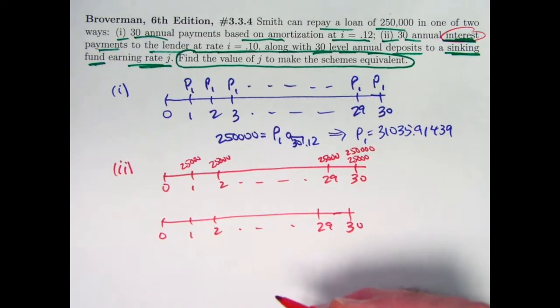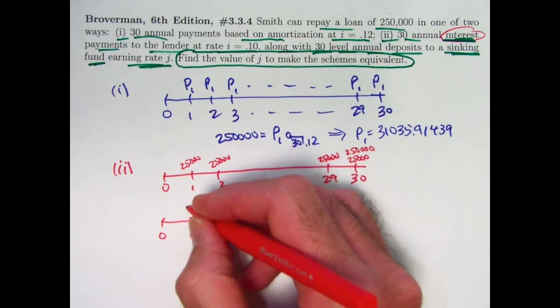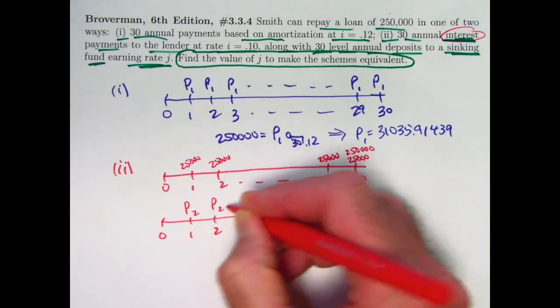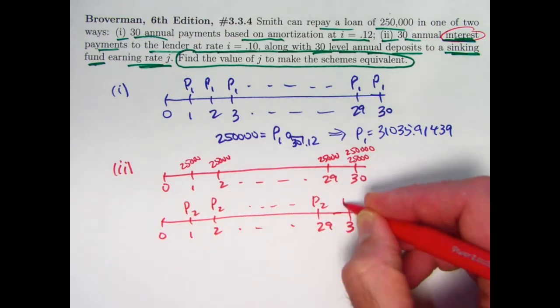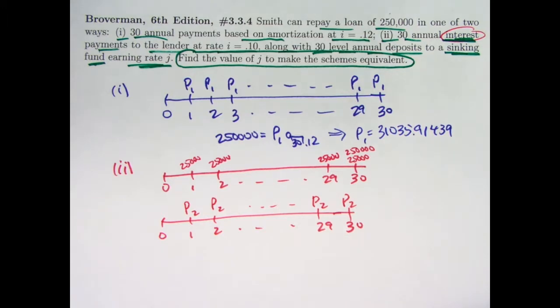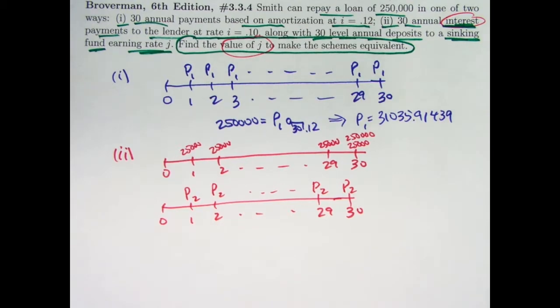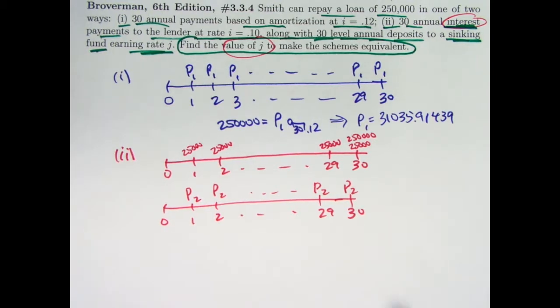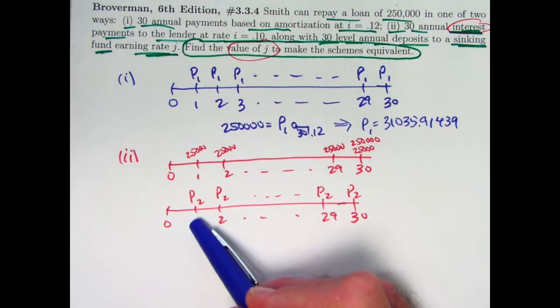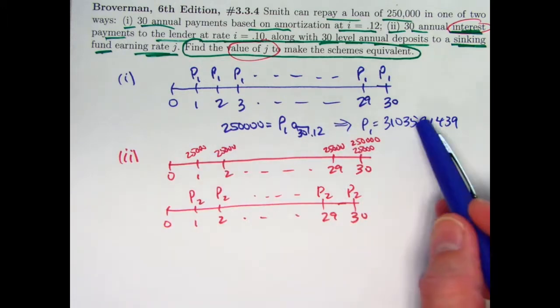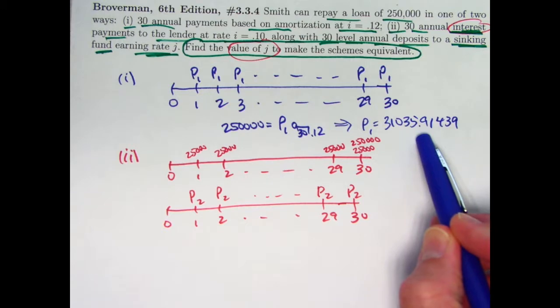We don't know, at least initially, how much we're going to pay into the sinking fund. Let's call that P2. I think P2 is going to be easy to figure out here. What we ultimately want to know is the unknown interest rate J for that sinking fund, an effective annual rate to make these equivalent. What value of P2 would make these equivalent? Well, if your total outlays every year are the same. So, in other words, P2 plus $25,000 is going to have to equal $31,035.91.